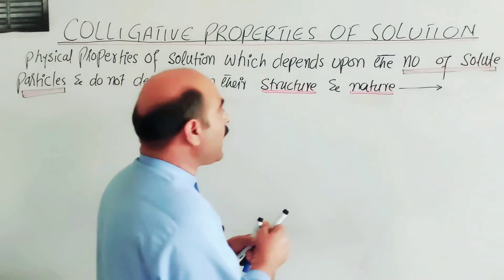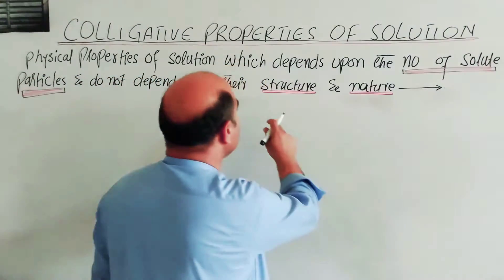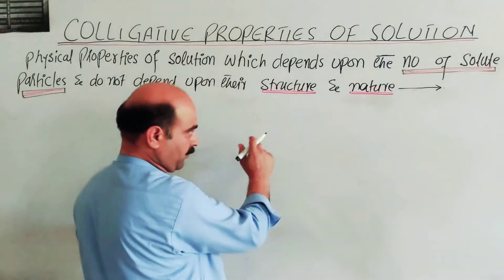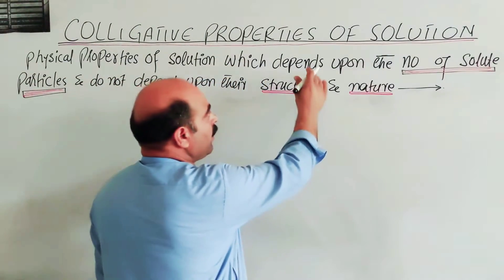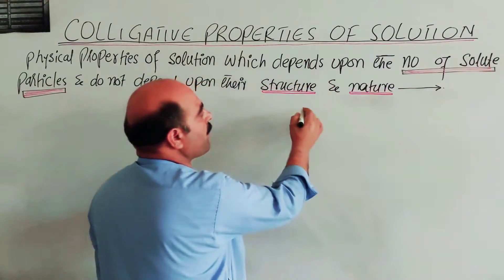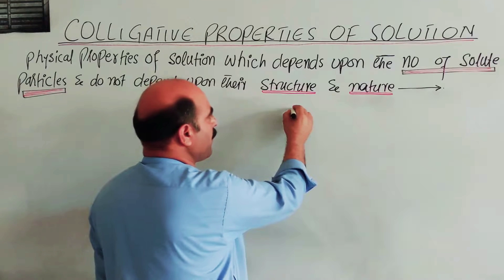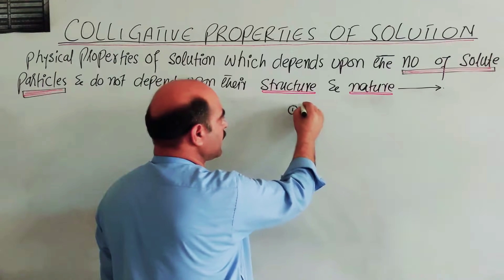Now let's look at examples of colligative properties. The colligative properties include, first, lowering of vapor pressure — a decrease in vapor pressure, represented as delta P.